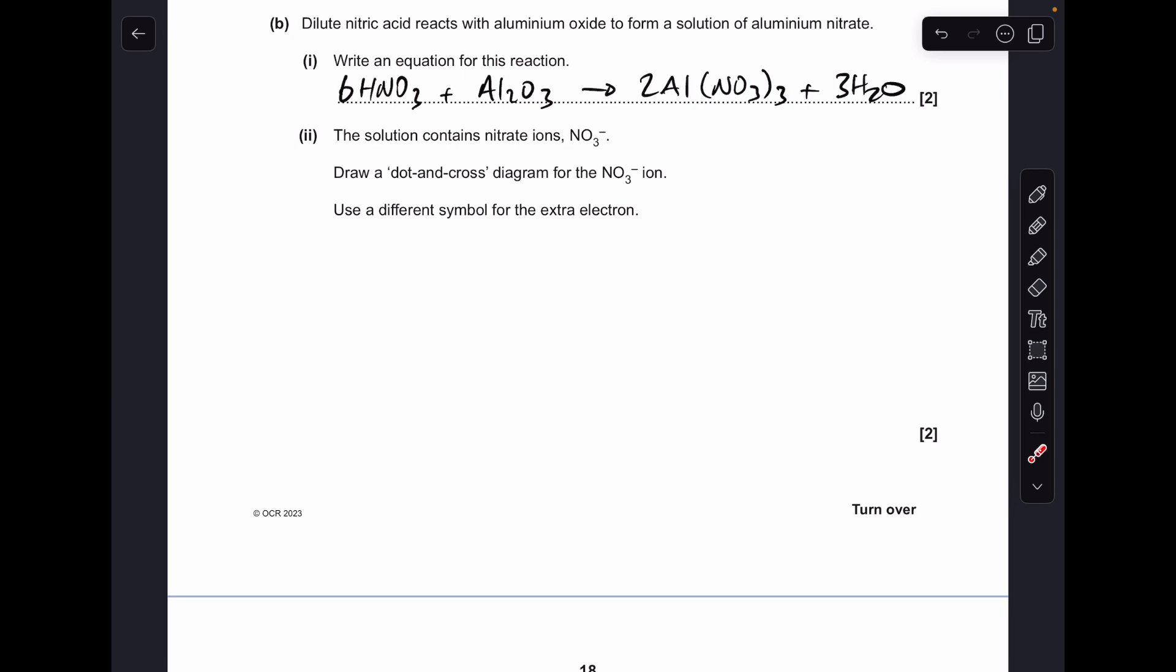Moving on to part B, so there's the equation there for the first part, and then moving on the second part, you can see there's a displayed diagram for the nitrate ion.